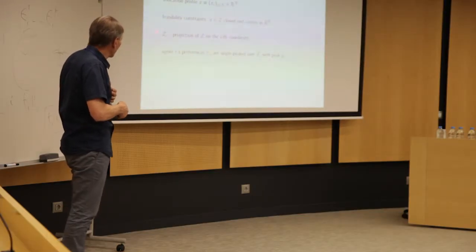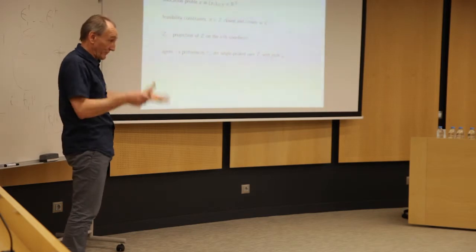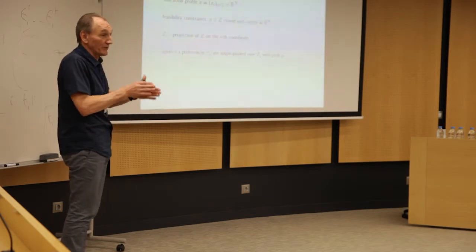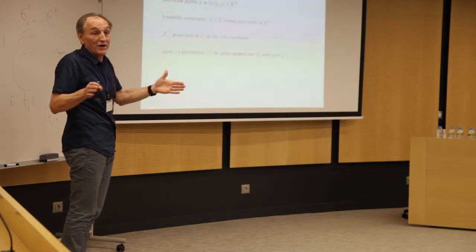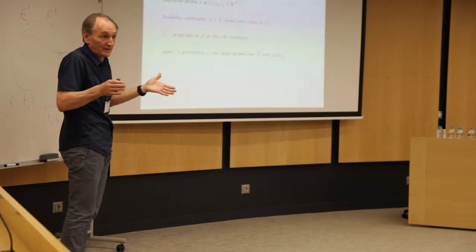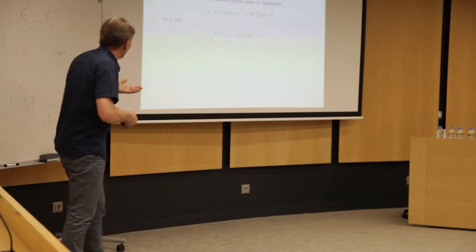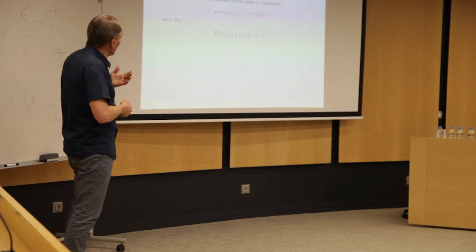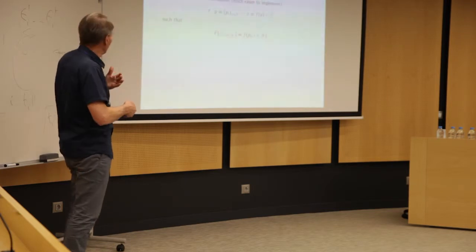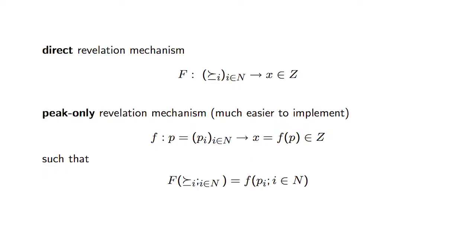So what matters for agent i is the projection of the full set on his own coordinate, because that's where he can hope, that's the range of what he can hope to get as final allocations. So his preferences will be single peaked over that range. And the mechanism is going to be a straightforward direct revelation mechanism.